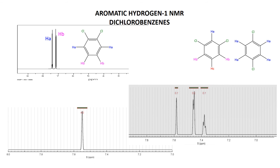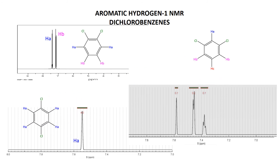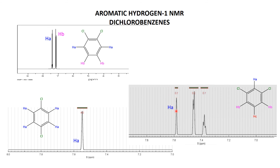Next one: we've got one signal. Which compound has one signal with all four hydrogens? The answer is 1,4 or paradichlorobenzene — every hydrogen is equivalent. And finally, this last spectrum has a one-hydrogen singlet, a two-hydrogen doublet, and a one-hydrogen triplet — so obviously it's the 1,3 or metadichlorobenzene. HA is the one-hydrogen singlet with no adjacent hydrogens. The two-hydrogen doublet is HB, each with one adjacent proton. HC is the one-hydrogen triplet split by two adjacent protons.